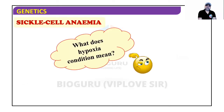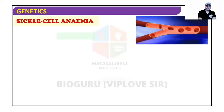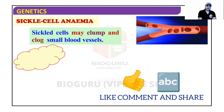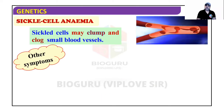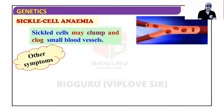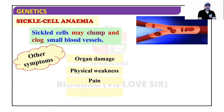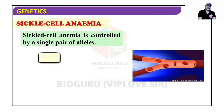Hypoxia occurs when proper oxygen binding does not happen, such as at high altitudes or under physical stress. Sickle cells make clumps and clog small blood vessels, which can even cause death. Other symptoms include organ damage, physical weakness, pain, and paralysis.